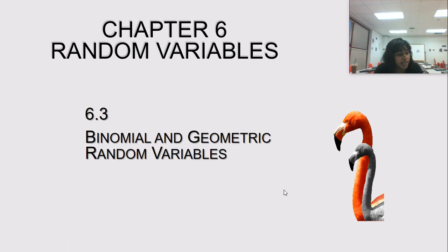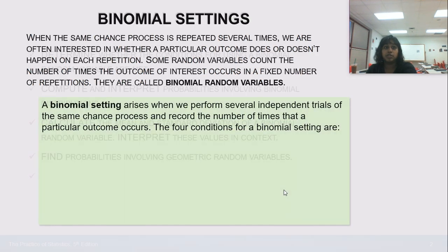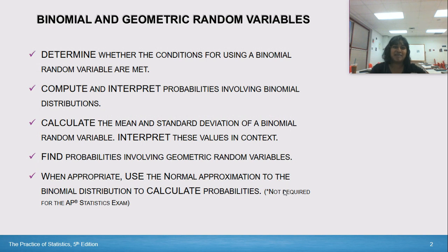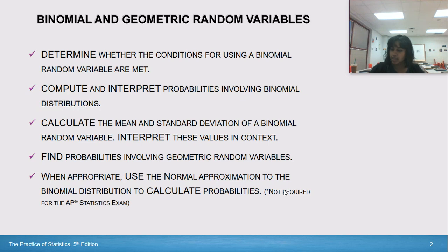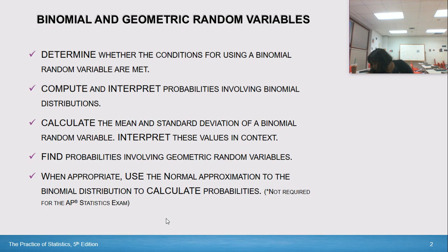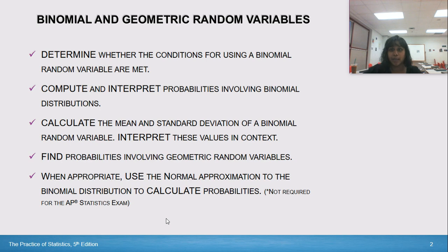Welcome to the final video of Chapter 6, talking about random variables. In this video, we're discussing binomial and geometric random variables. You need to be able to determine and understand binomial distributions, calculate their mean and standard deviation, and find the probabilities of geometric random variables. The normal approximation of the binomial distribution is not tested, so I've got a big X on that screen.